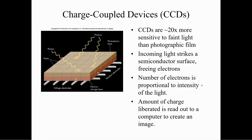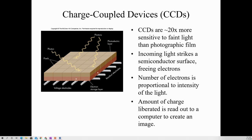We use charged couple devices — CCDs. They're 20 times more sensitive to faint light than photographic film, giving 75% possible efficiency compared to the 4% of film. Incoming light strikes a semiconductor surface, freeing up electrons. The number of electrons is proportional to the intensity of the light, and the amount of charge liberated is read out to a computer to create an image.